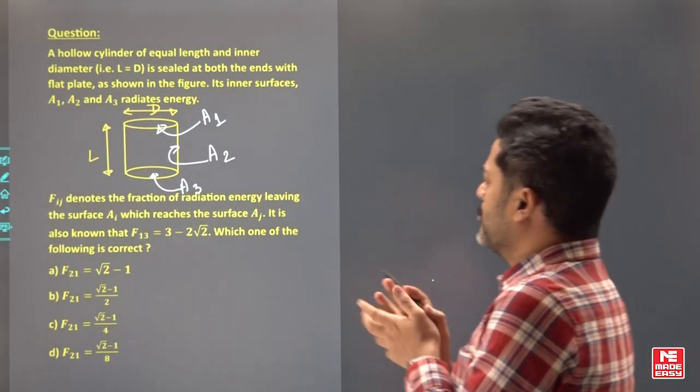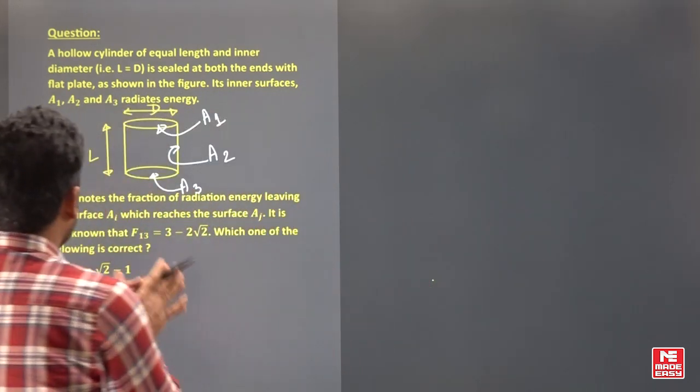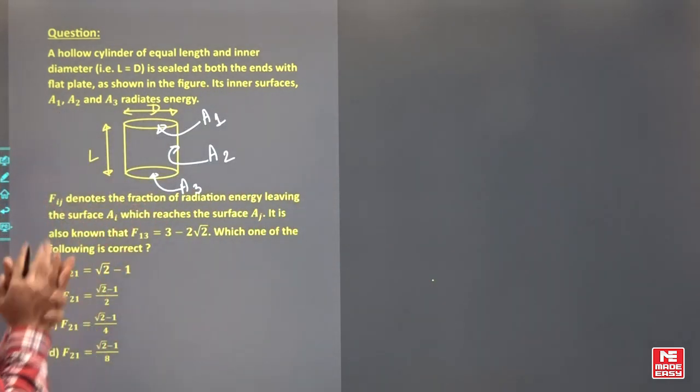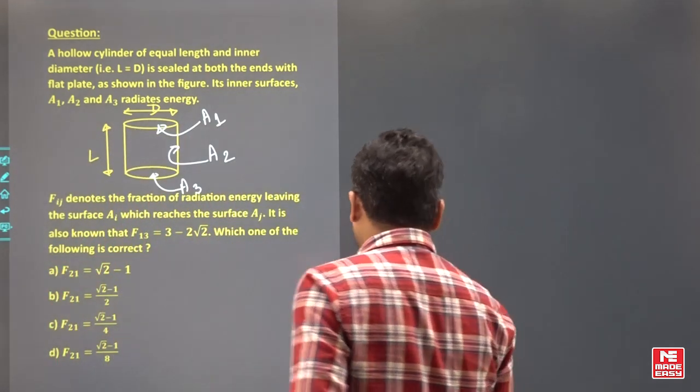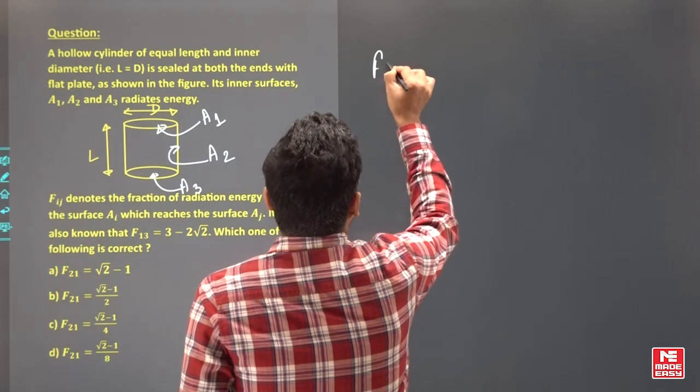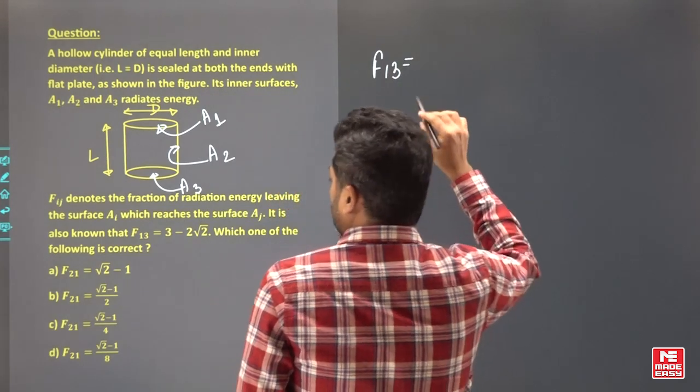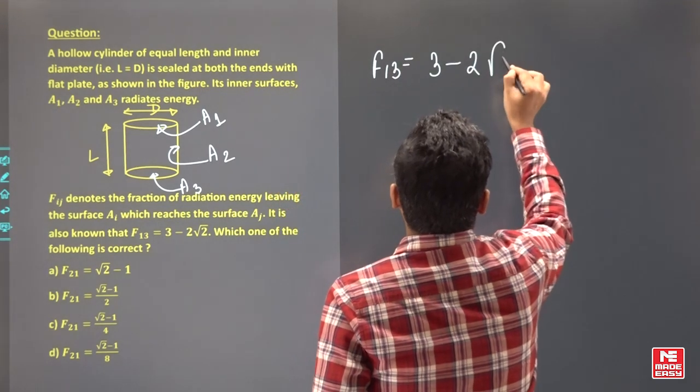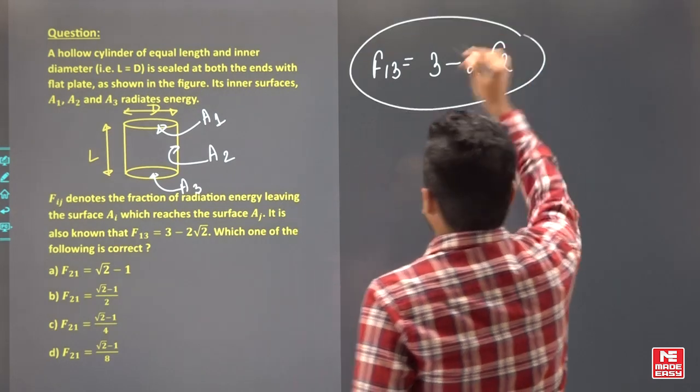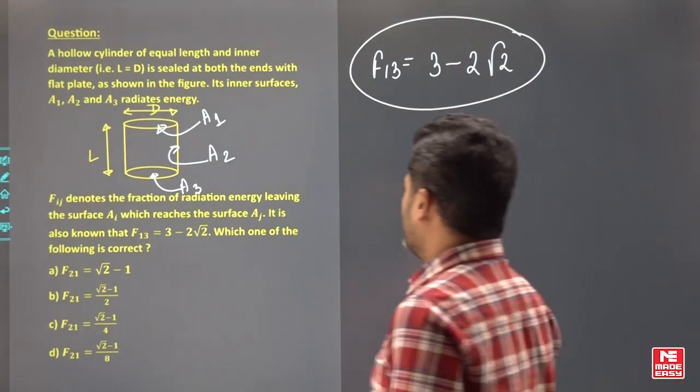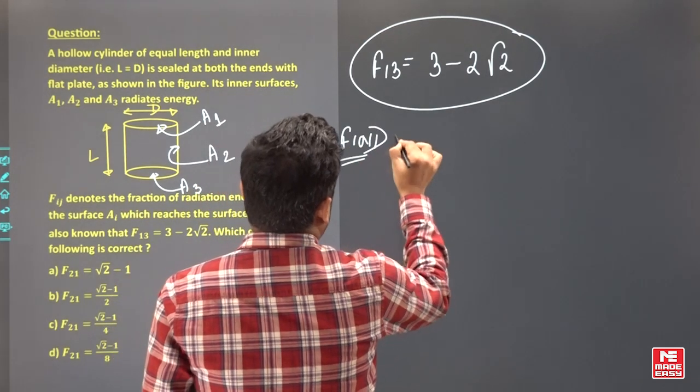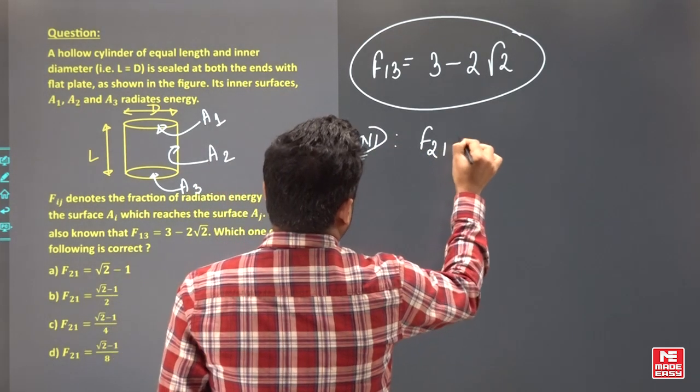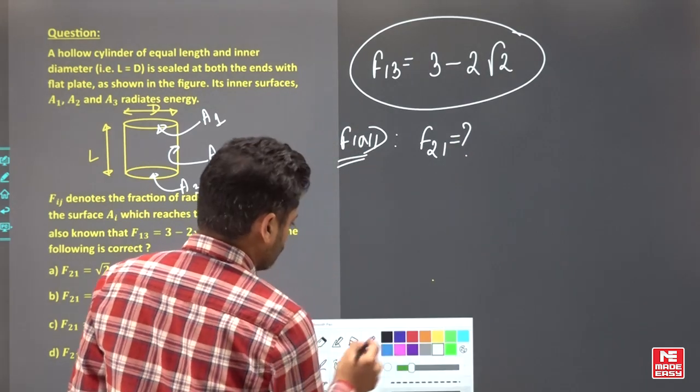Now Fij is the view factor, the fraction of radiation leaving surface Ai reaching surface Aj. It is also known that F13 is given as 3 minus 2 root 2. It is asking you to find F21.